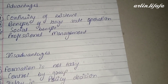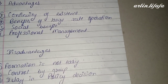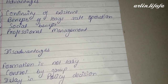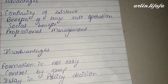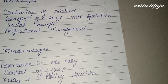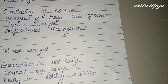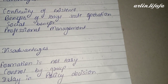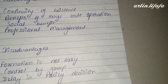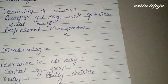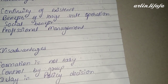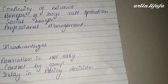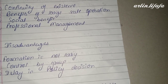Joint stock company के advantages: continuity of existence के chances बहुत ज़्यादा होते हैं क्योंकि इसमें shareholders होते हैं। Benefits of large scale operation तब भी beneficial होते हैं जब large scale पर काम हो। Social benefits भी मिलते हैं। Professional management — management structure professionally काम करता है।